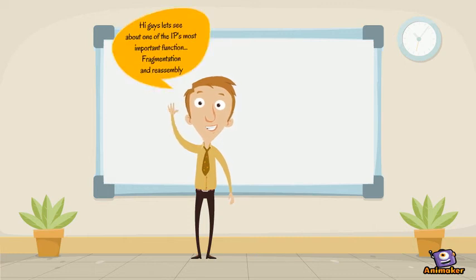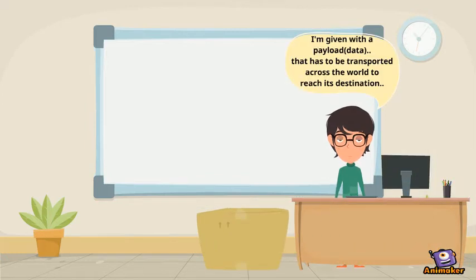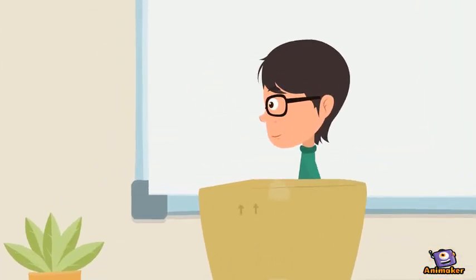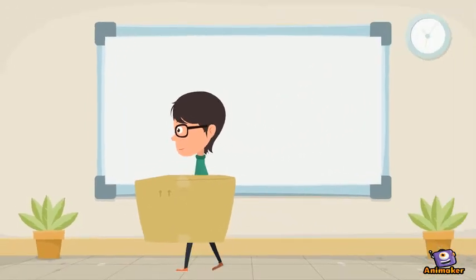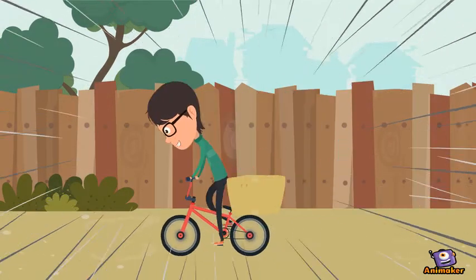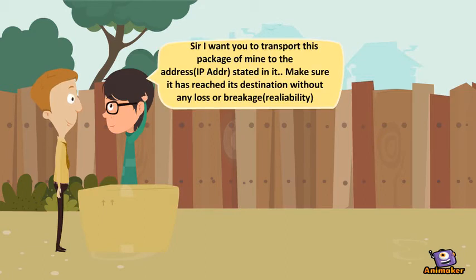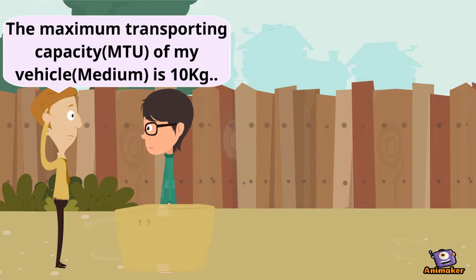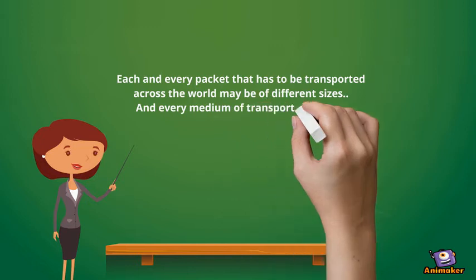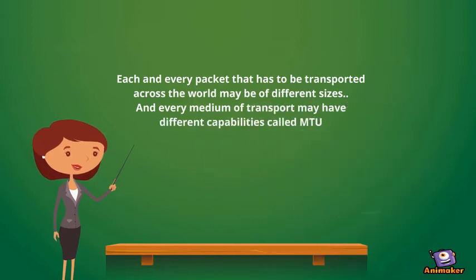Hi guys, let's see about IP fragmentation and reassembly. We will be given with a payload, which is termed as data, that has to be transported across the world to reach its destination. The given packet has to be transported to its respective IP address in order to reach its destination without any data loss. This makes it reliable. Each and every packet that has to be transported across the world may be of different size and may have a different medium of transport.